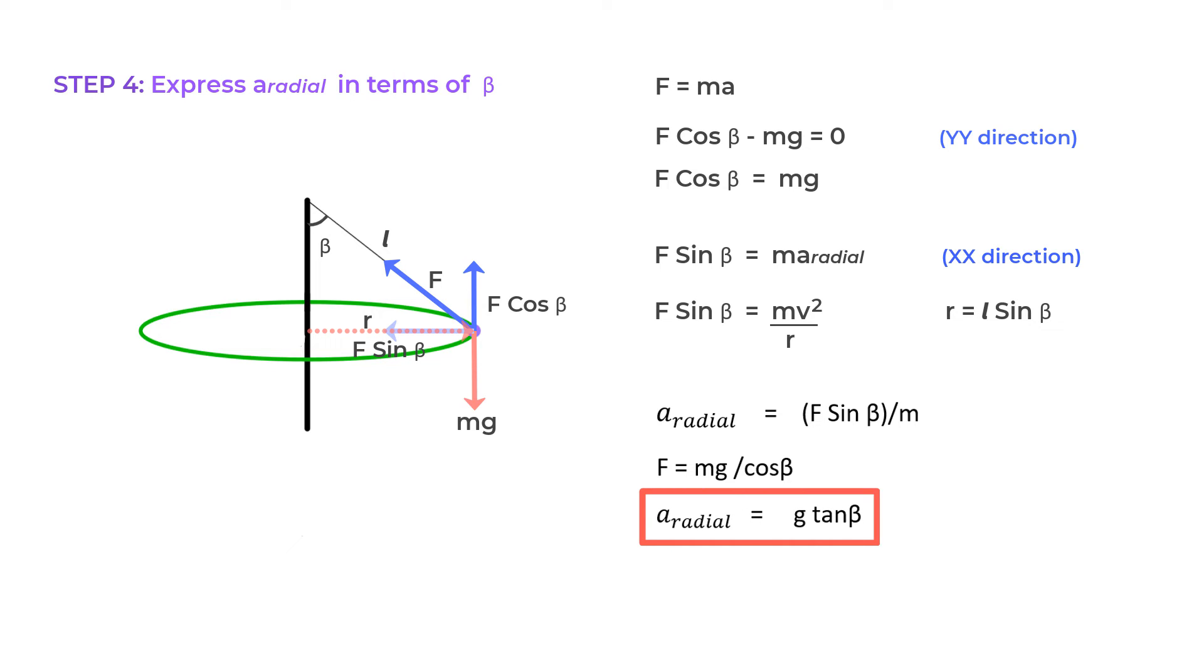Now, we know that the period T is the time taken for one complete revolution of the ball. That would be a distance of 2 pi R and can be expressed as T equals 2 pi R upon V. That is simply the formula time equals distance upon velocity, where distance here is the circumference and V is the velocity.